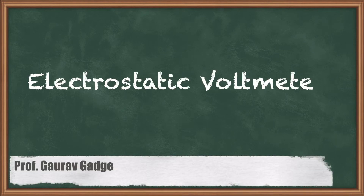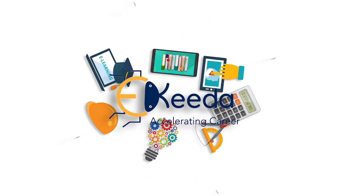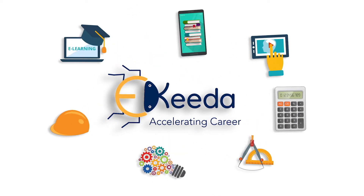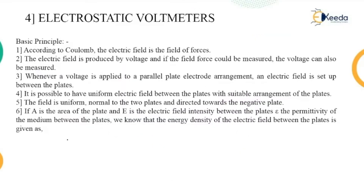Hello friends. Now let us discuss our next topic related to high AC voltage measurement, that is the electrostatic voltmeter. The meaning of the electrostatic voltmeter is that electrical energy in the form of static is given to the circuit or to the unit where the voltmeter is placed, and that does the measurement of the input voltage. The voltage measured by this kind of circuit can be AC as well as DC.